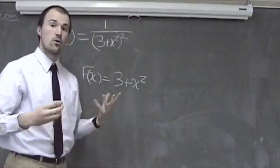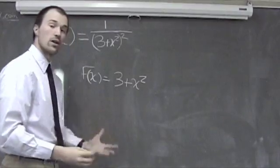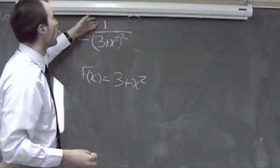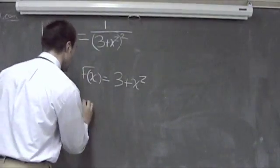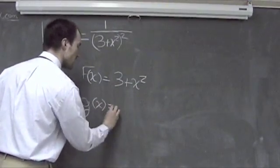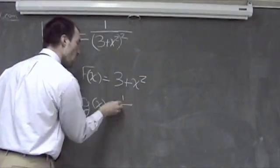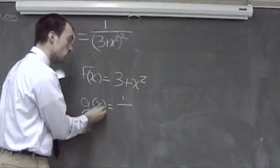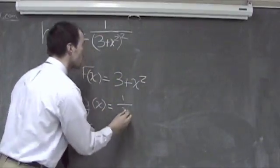Now to look for my g of x, or the other function that is part of this composition, I need to look at whatever is left. And that is g of x is 1 over whatever quantity we have in this function, which we would usually call x squared.